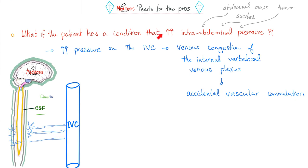Contraindications: patient refusal, bleeding diathesis (not absolute — guidelines are complex), infection at the injection site, and intracranial hypertension (because you'd be removing CSF, not adding more). If the patient develops paresthesia while you're injecting local anesthetic, stop immediately — paresthesia means you have hit a nerve.